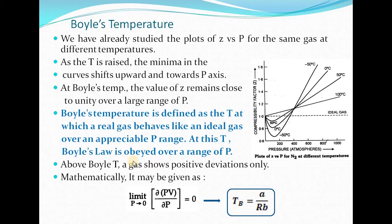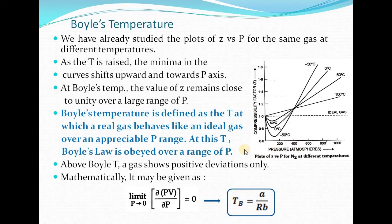Now if we want to derive the mathematical expression for Boyle's temperature, we know that for the condition of minima, the derivative of the term along the y-axis with respect to the term along the x-axis must be zero. Along the y-axis we have either PV or the compressibility factor Z, and along the x-axis we have pressure. So for the condition of minima, the derivative of PV with respect to pressure should be zero: (∂(PV)/∂P) = 0.